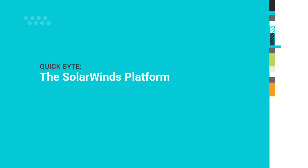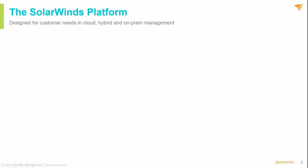In this video, we will discuss the SolarWinds platform, the different parts contained in the platform, and how they work together to solve customers' needs across a diverse IT landscape. The SolarWinds platform encompasses many disciplines and has the flexibility to help customers with on-prem, hybrid, and cloud management. Within the SolarWinds platform, there are two broadly defined sub-components designed to help customers whether they are fully on-prem, have a hybrid of on-prem and cloud, or are fully cloud-based.